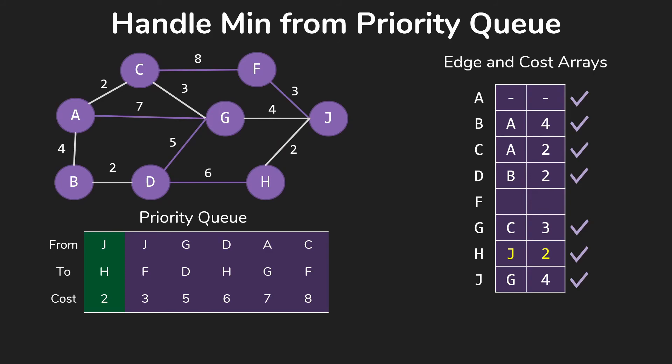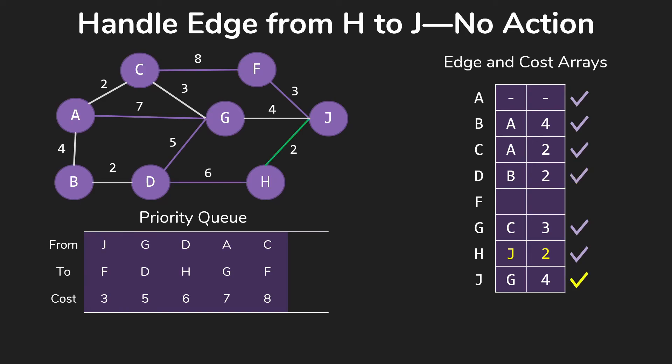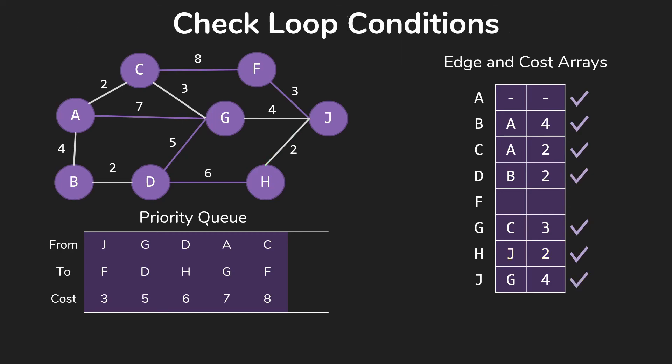And pull the next edge off of our priority queue. This will be JH for 2. So we update that. Check its edges. Both D and J are already in our tree, so neither of those gets any action. And we're back to checking our loop conditions.